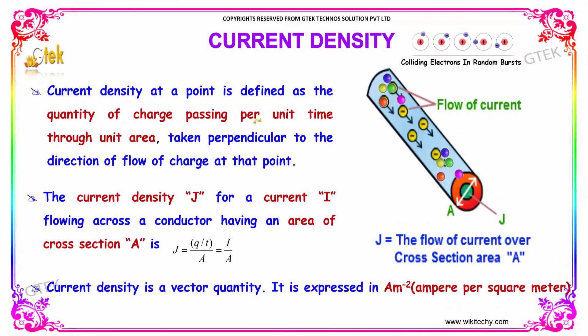Current density at a point is defined as the quantity of charge passing per unit time through a unit area, which is taken perpendicular to the direction of flow of charge at that point.